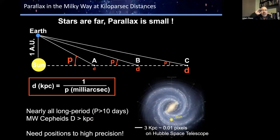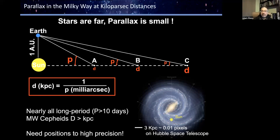When we use geometry to measure the distance of Cepheid variables, the most basic way is to measure trigonometric parallax — the angle through which stars move over the course of a year as the Earth goes around the Sun. The inverse of parallax tells us the distance. The problem is that most long-period Cepheid variables in the Milky Way are kiloparsecs away, so the parallax angle is very, very small — a fraction of a milli-arc second, or about a hundredth of a pixel movement on the Hubble Space Telescope.